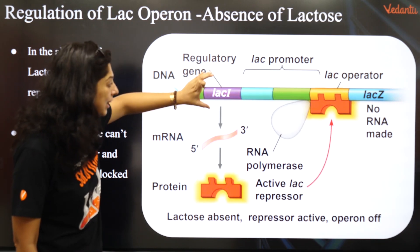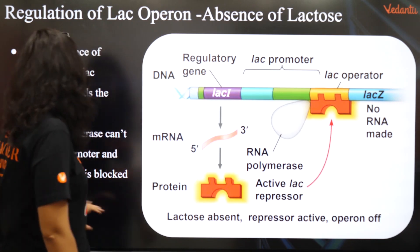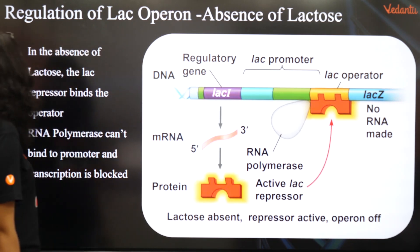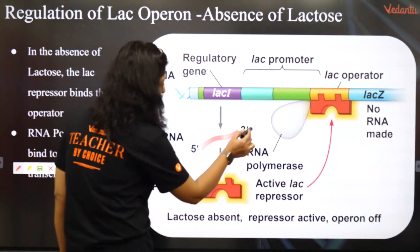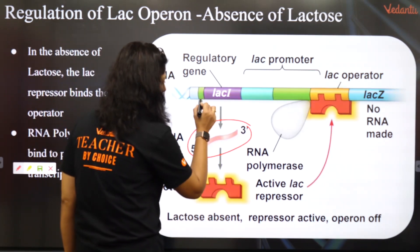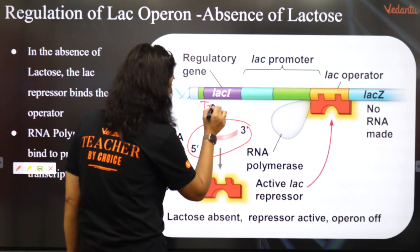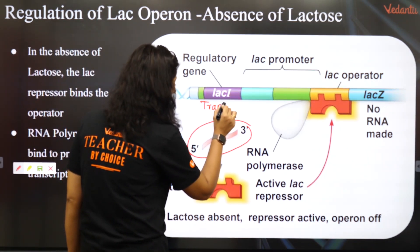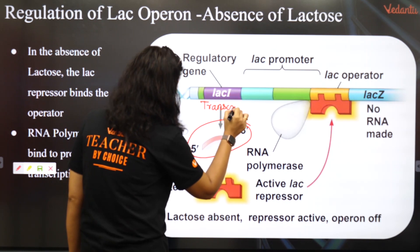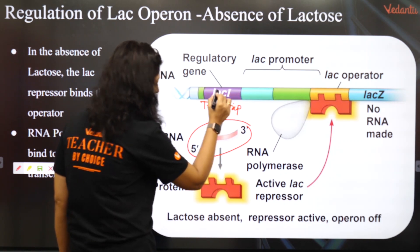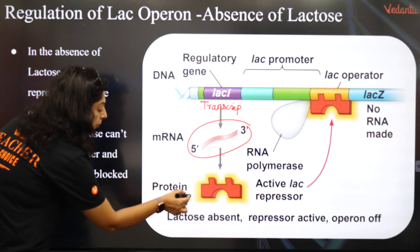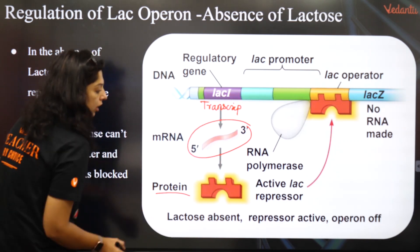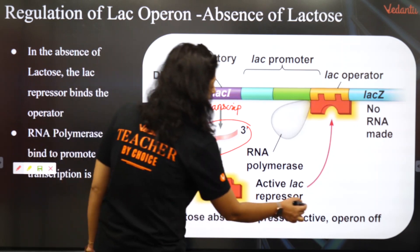And I told you that this I gene — you already know it. This I gene will make an RNA. This is transcription. And it has made a protein called Repressor.